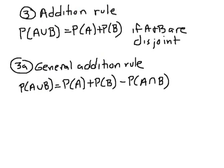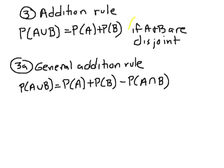Remember when we talked about the rules of probability, the third rule was something I called the addition rule. That was the probability of A or B is equal to the probability of A plus the probability of B. At the time I made the condition that this only applies if A and B are disjoint. So now we're going to talk about what if they're not disjoint. This is why we're going to have something called the general addition rule.